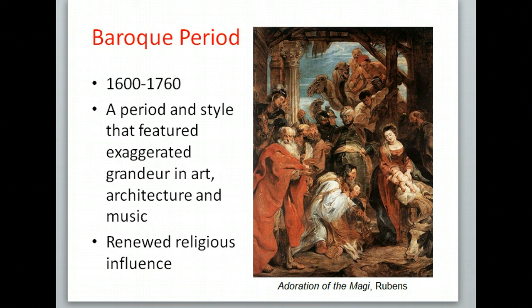During this time period, we also see a renewed religious influence. Between the Protestant Reformation and the Enlightenment, we saw a lot of people becoming non-religious or doing more secular things with secular art, especially in the Renaissance. Now we're starting to see painters paint more religious scenes, like The Adoration of the Magi by Rubens. You can see the religious theme — the three wise men coming to visit the baby Jesus in the manger, with his mother Mary, and the cows and camels in the background.